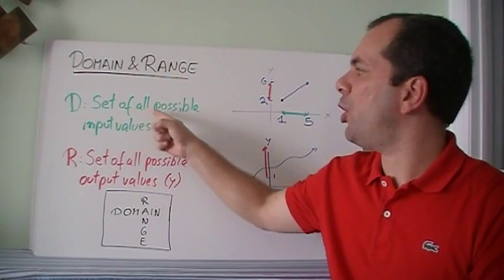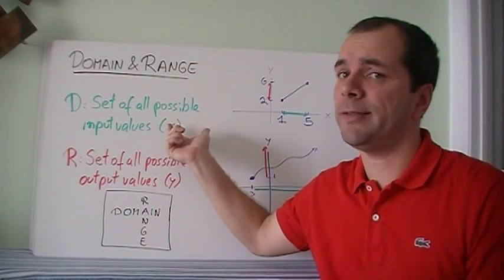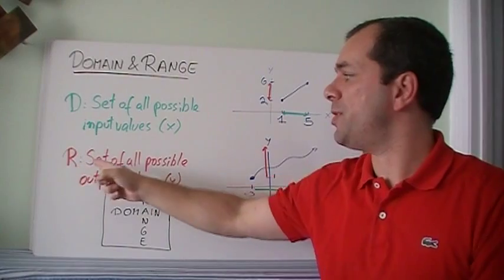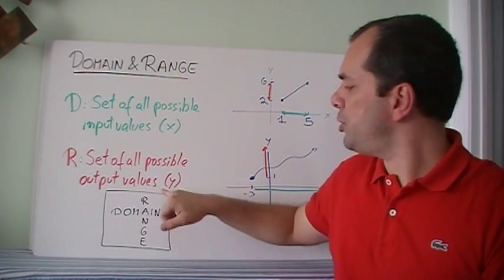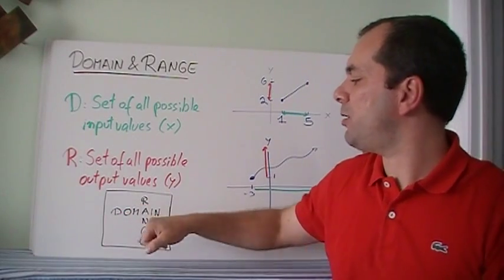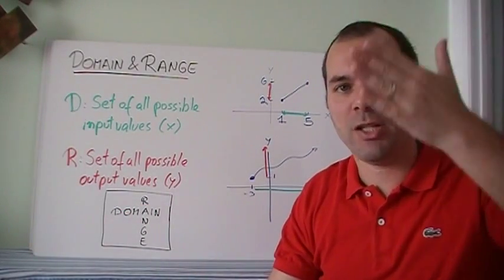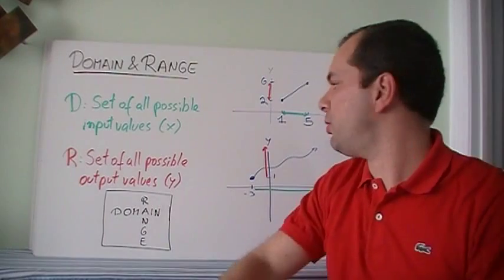Domain is the set of all possible input values, usually we're talking about x. Range is the set of all possible output values, and usually we're talking about y. A student once wrote this domain and range a little cross to remember that range is the vertical one and domain is the horizontal one.